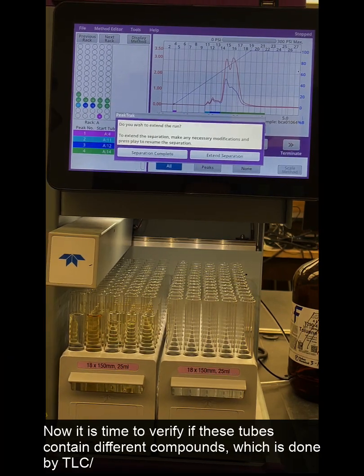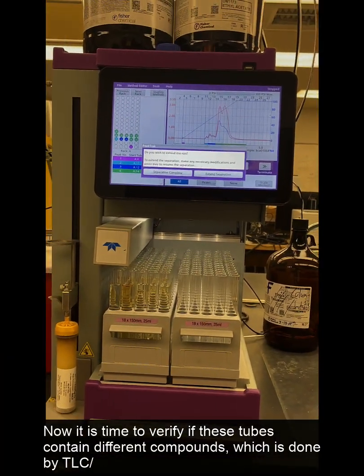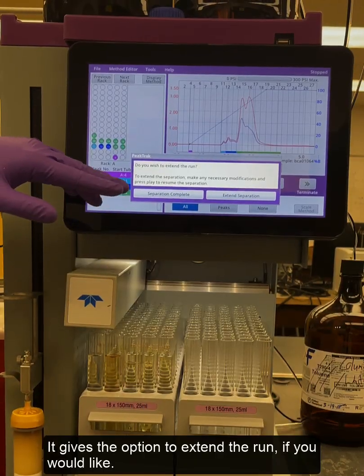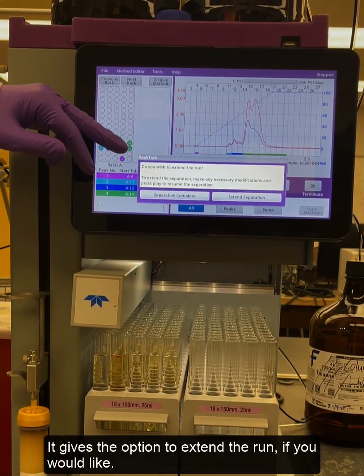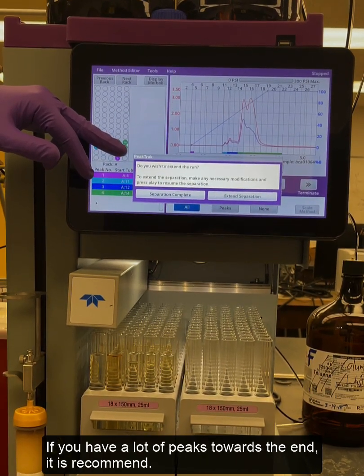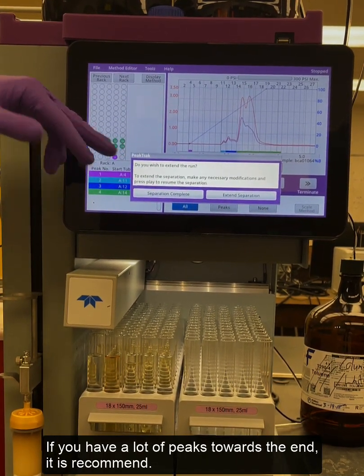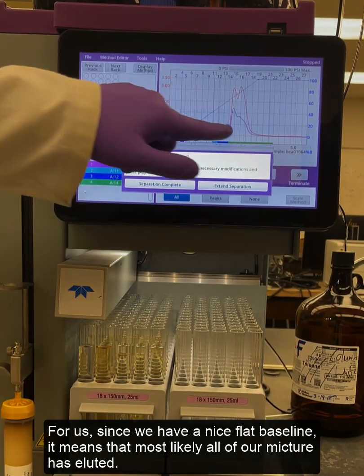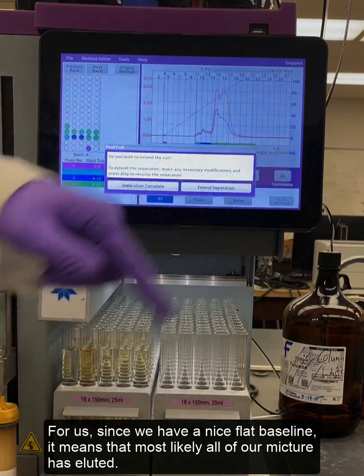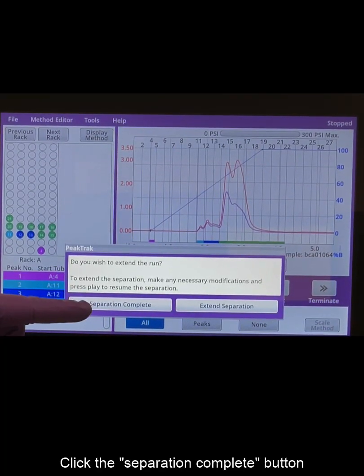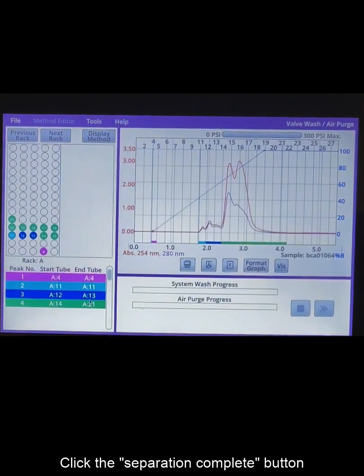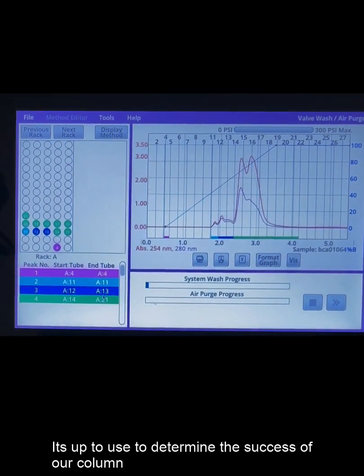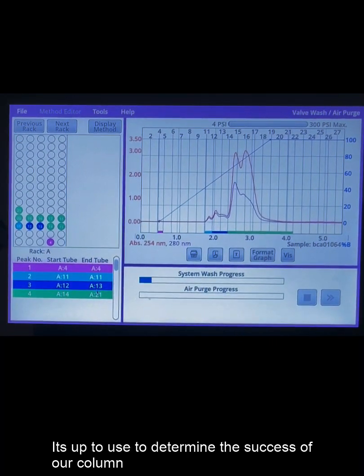Now it's time to verify these tubes contain different compounds, which is usually done by TLC. There's an option to extend the run if we would like. If you have a lot of peaks towards the end it's actually recommended, but for us since we have a nice flat baseline it means most likely all of our mixture has eluted. Click the separation complete button and it will allow the system to do a wash and an air purge. It's up to us to determine the success of our column.